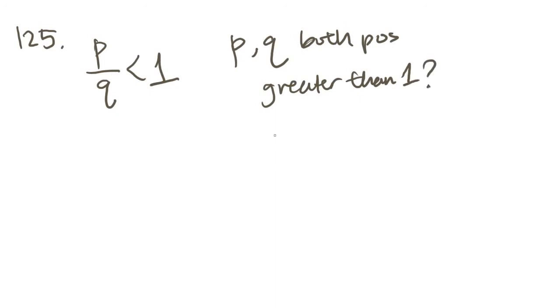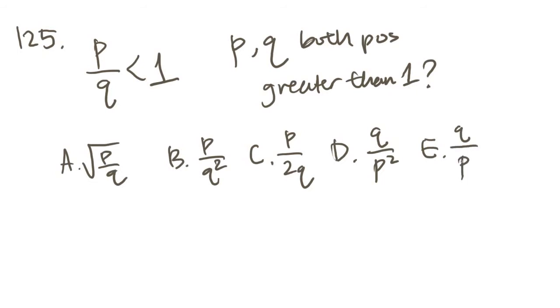Number 125 says if P over Q is less than 1 and P and Q are both positive, which of the following must be greater than 1? Let me list out the answer choices here first. A is the square root of P over Q. B is P over Q squared. C is P over 2Q. D is Q over P squared. And E is Q over P. Remember that both of these are positive and we are looking for something that is going to be greater than 1.